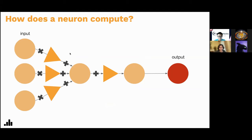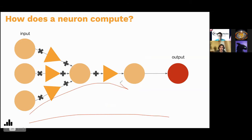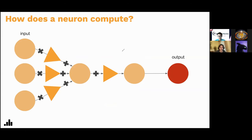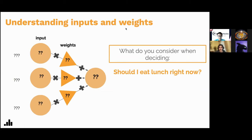Now we'll do a quick demo. This is a very very simple neural network, but once we figure out how information passes through it, you'll understand how it passes through any neural network of any size — it's the same in terms of the math, just scaled down. To start: what do you ask yourself when trying to determine if you want to eat lunch? What questions run through your head?